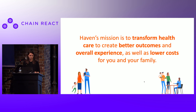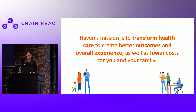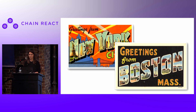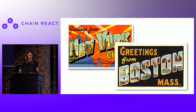First let me do a quick introduction about Haven. It's a new healthcare company — a joint venture between Amazon, Berkshire Hathaway, and JPMorgan Chase. Our mission is to transform healthcare to create better outcomes and overall experiences for patients, as well as lower costs for patients and their families. We have offices in New York and Boston, and we are hiring for all kinds of software engineers, so if you're interested, please come talk to me or any of my colleagues after.